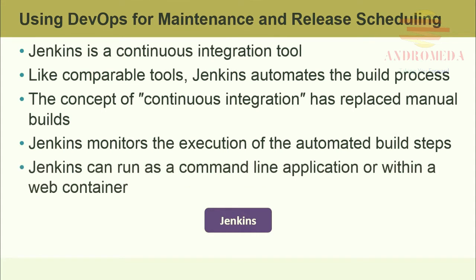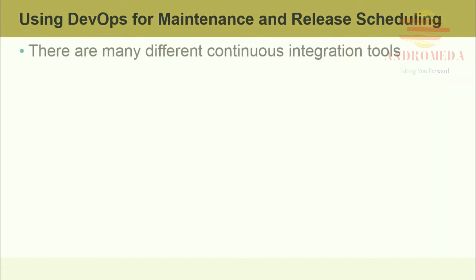Jenkins can run as a command line application or within a web container. There are many different continuous integration tools that run the gamut on what they can do and what they support, loosely organized into three categories: vendor, platform, and language.